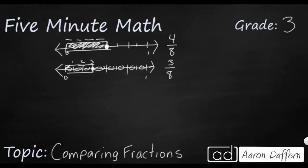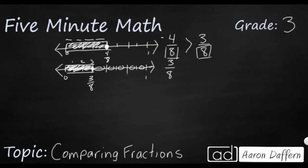This is three eighths and this is four eighths, and it's pretty easy to compare because you can see that the four eighths is a little bit larger. So we could say four eighths is larger than three eighths. When the denominators are the same — remember, the denominators are the bottom numbers — they show you that both fractions are broken up into the same number of pieces. It's easy to compare them by just looking at the numerators, the top numbers, because the larger numerator is the larger fraction if the denominators are the same.